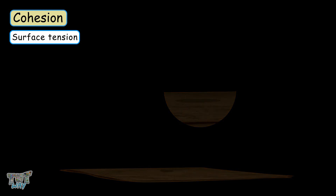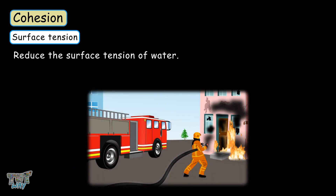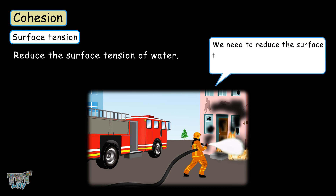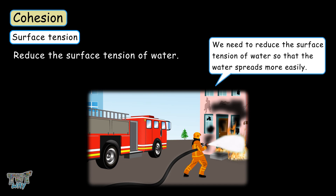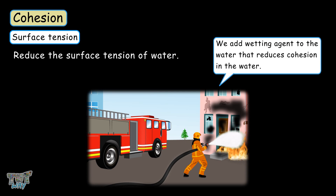Now when do we need to reduce the surface tension of water? When we use water to extinguish fire. We need to reduce the surface tension so that the water spreads more easily and can cover a larger area, which is required to extinguish the fire faster. We add a wetting agent to the water that reduces cohesion so the water spreads more easily and covers a large area.